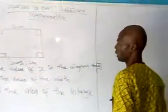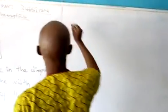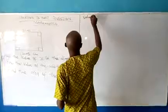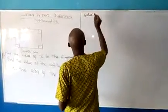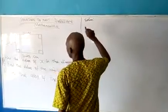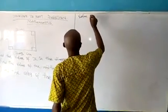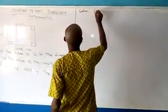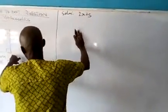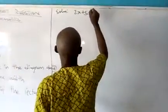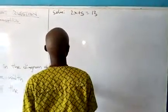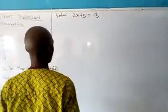Let's go to question number 1. Find the value of x in the rectangle. Solution number 1. From what we have, what we are given already, we are told that 2x plus 5 is the length of it, while on the other page we are told that the length is equal to 13 cm.